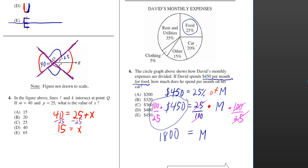But we want to know how much he spends on his car. Well, he only spends 20% of his total monthly expenses on his car. So we need to figure out what 20% of $1,800 is.